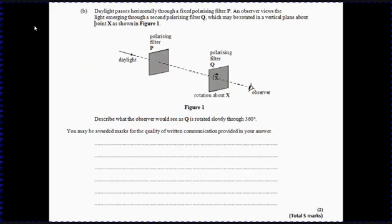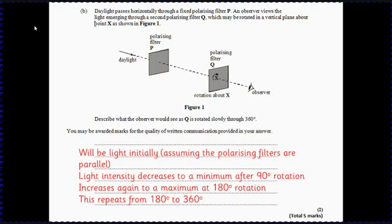And then the last part, polarization. Again, this is a fairly straightforward question because it's just to describe, there's no need to explain why this happens. So if we assume that the polarizers are parallel at the start, which it doesn't actually tell us in the question, what happens is that at the start it's light.